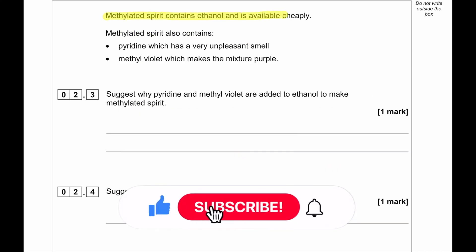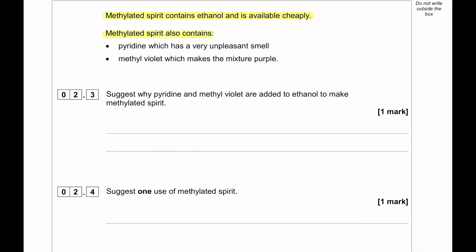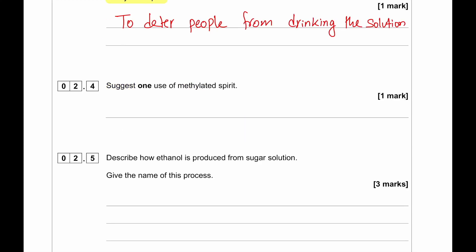Methylated spirit contains ethanol and is available cheaply. Methylated spirit also contains pyridine which has a very unpleasant smell and methyl violet which makes the mixture purple. Suggest why pyridine and methyl violet are added to ethanol to make methylated spirit. This is mainly to deter people from consuming this solution. So just one use of methylated spirit. Methylated spirit can be used for antiseptic reasons or it can be used as a fuel or solvent.